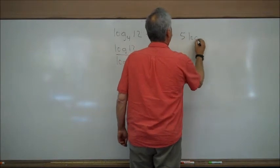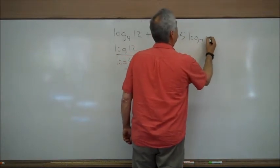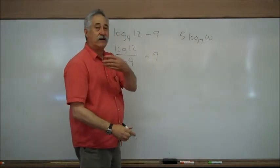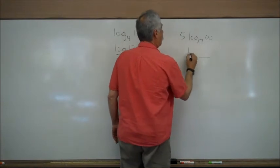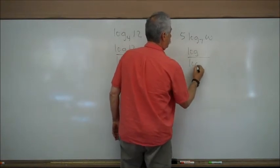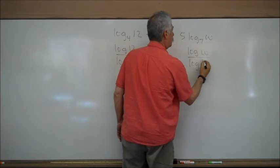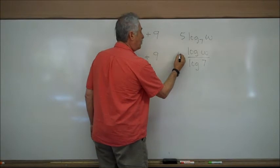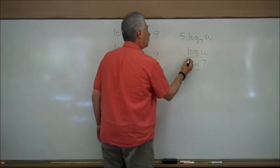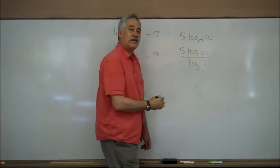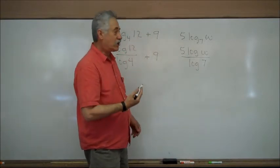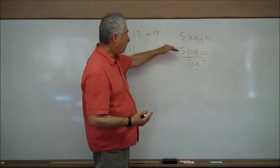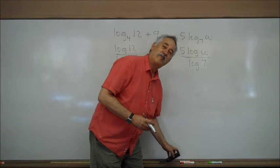Another example: 5 times the logarithm base 7 of w. Convert this to base 10. Write a fraction bar. Logarithm of w over logarithm of 7. What about the 5? You have a choice — you can put it in front with parentheses around the whole thing, or you can put it in the numerator. My suggestion: keep it in the numerator. There are things you can do with it later. You have now converted it to base 10.